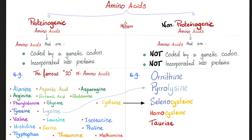Let me ask you a question: how many amino acids do we have in our bodies? My biology professor told me that we have 20 amino acids only. The 20 amino acids that you're talking about are only the proteogenic amino acids. You have other non-proteogenic amino acids in your body. The difference: proteogenic amino acids will make proteins — they are incorporated into proteins — and they are also coded by a genetic codon. Remember these three lovely nitrogenous bases?